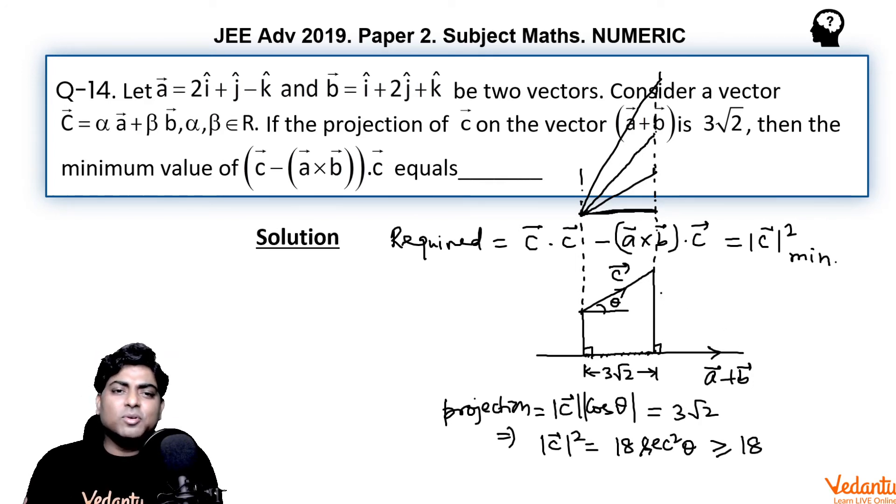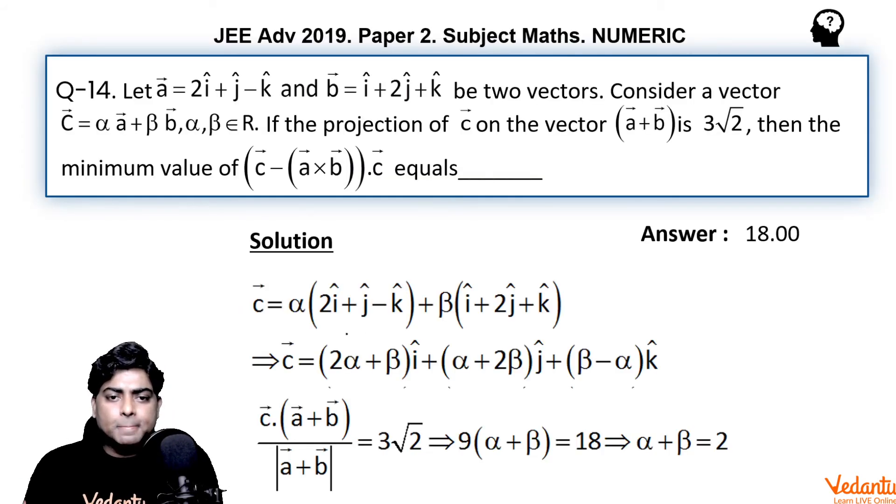If you go in the usual manner by writing c as alpha a, where a is given as 2i + j - k, plus beta (i + 2j + k), and collecting the components of c along i, j, k, and applying the formula for projection, you will again get the correct value of mod c squared minimum value in that way also. You can go through the solution. It is written here. c can be taken as this, and we wrote it as a vector in terms of i cap, j cap, k cap.